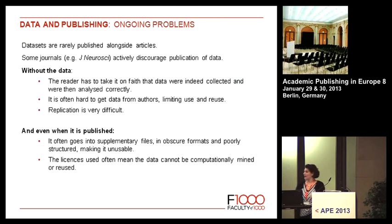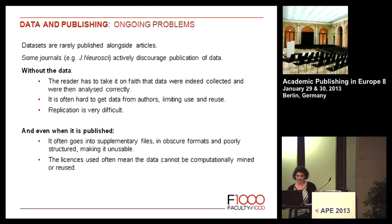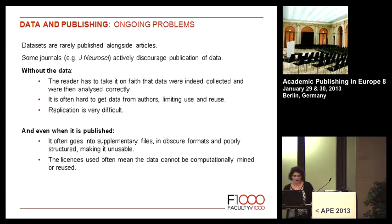Moving on to the data. A lot of ongoing problems are that data is still rarely published alongside articles — in fact, some journals like the Journal of Neuroscience actively discourage publication of data. Without data, researchers and readers basically have to take on faith that the data was collected properly and analysed correctly. In reality, trying to get hold of data after an article has been published is generally quite difficult and time consuming, limiting reuse and making replication very hard. Even when data is published, it often goes into supplementary files in obscure formats or as a PDF, poorly structured and basically unusable. And often the licences mean the data can't be computationally mined or reused properly.